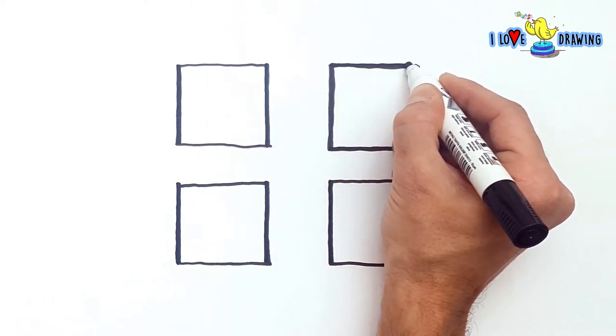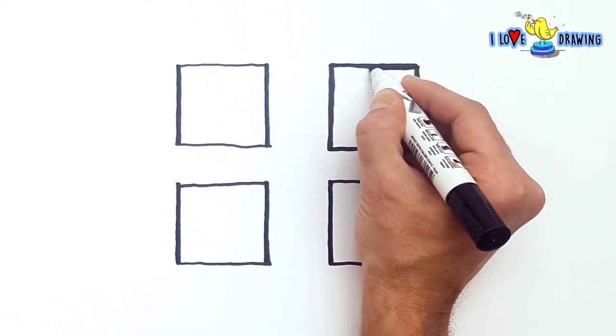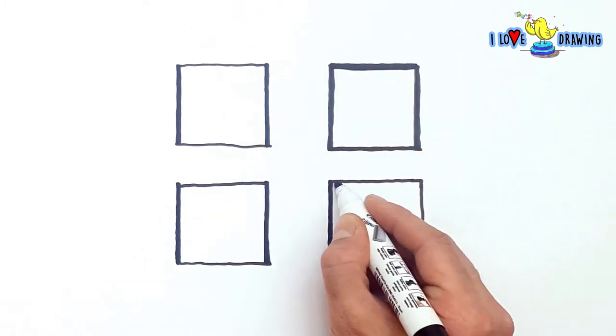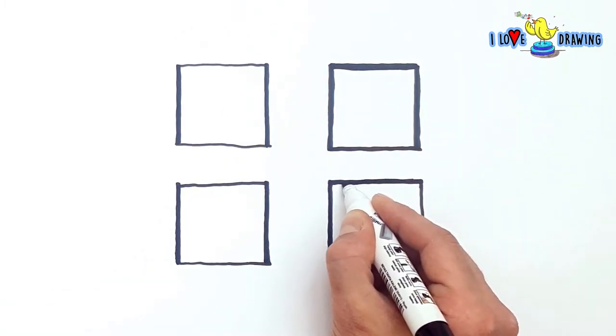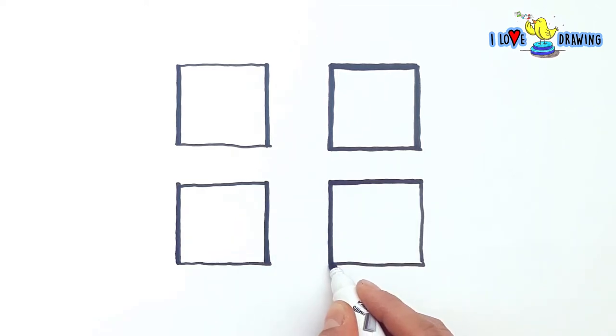Expressions are created by three parts of the face. Our mouth, our eyes, and our eyebrows. That means if we draw these parts differently on each of the faces, we're going to have different facial expressions.